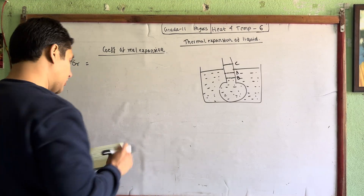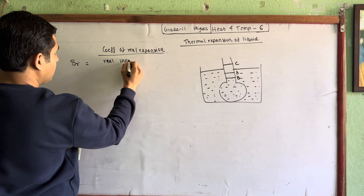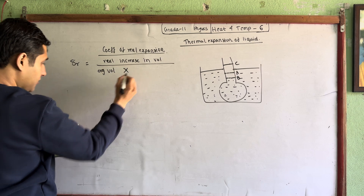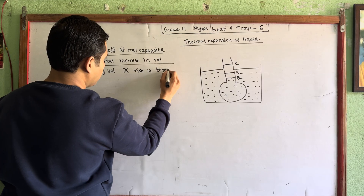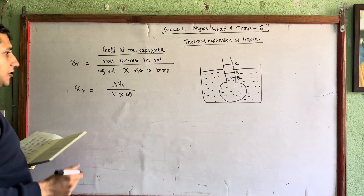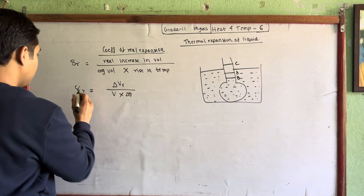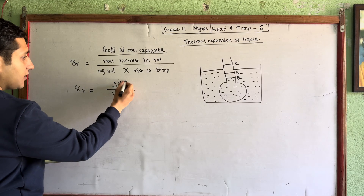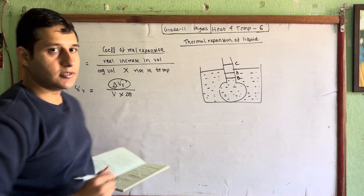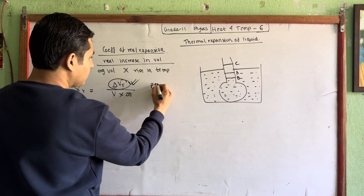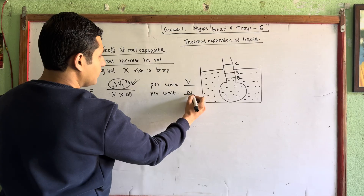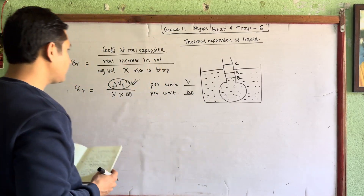What is the real increase in volume? We have a formula for the coefficient of real expansion. The formula: real increase in volume equals original volume into rise in temperature. That means δVr divided by original volume V into δθ equals γr. This is the definition: the change in real volume per unit original volume per unit change in temperature.